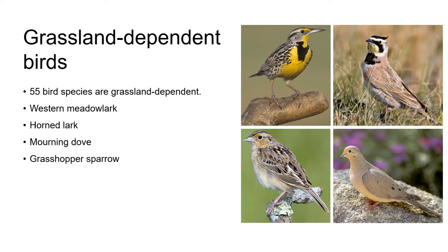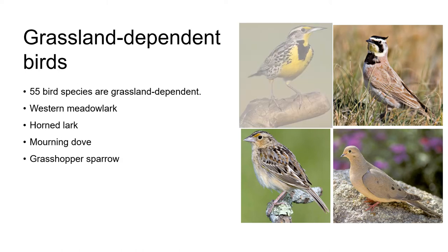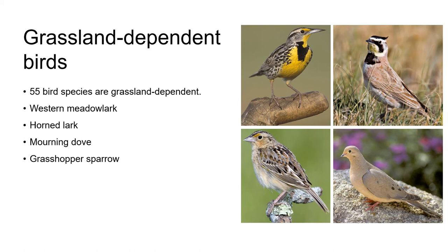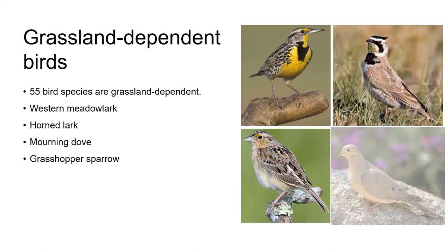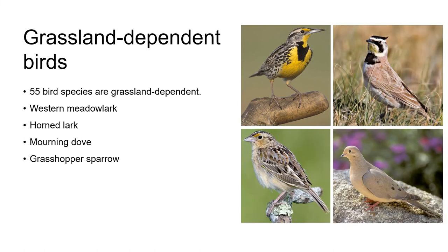In addition to the raptors, around 55 other bird species in California are grassland dependent, and these include the western meadowlark, horned lark, mourning dove and grasshopper sparrow, which all forage for insects and seed they find on the ground and on low-growing plants in grassland.